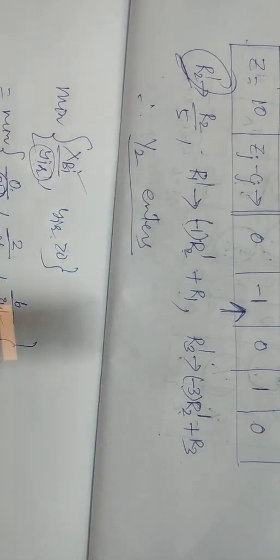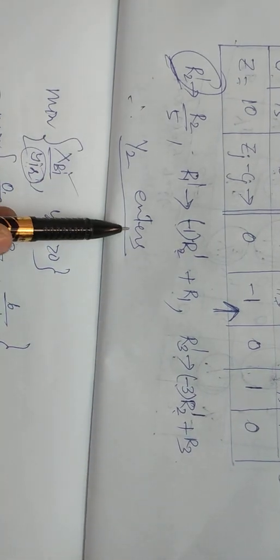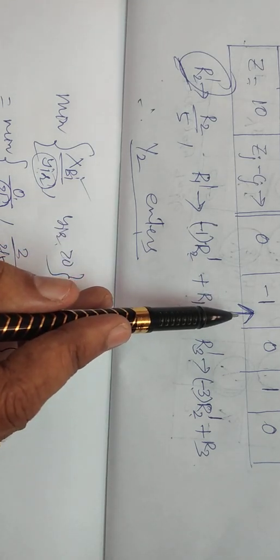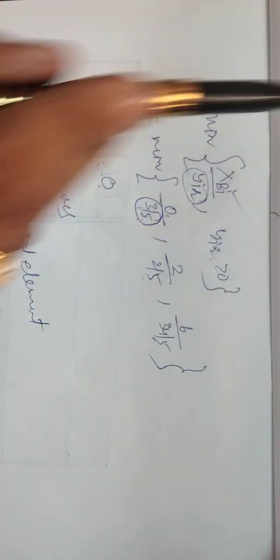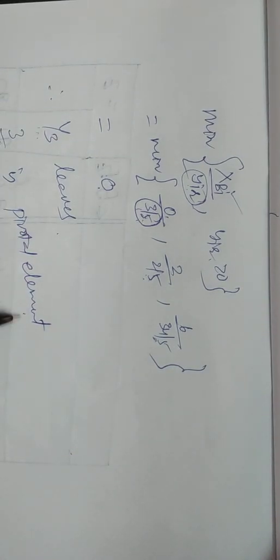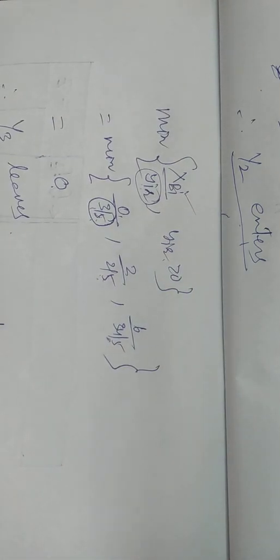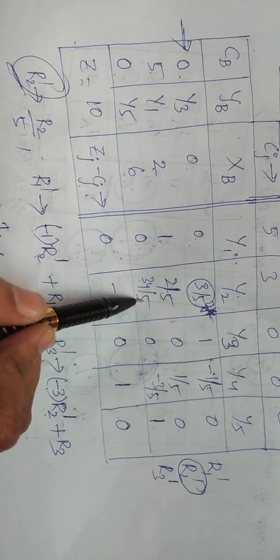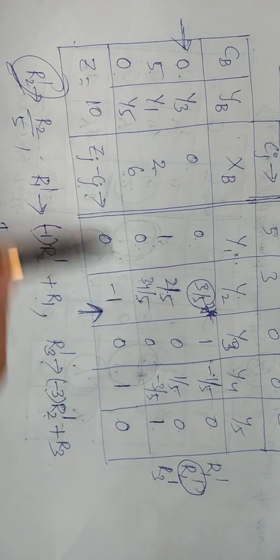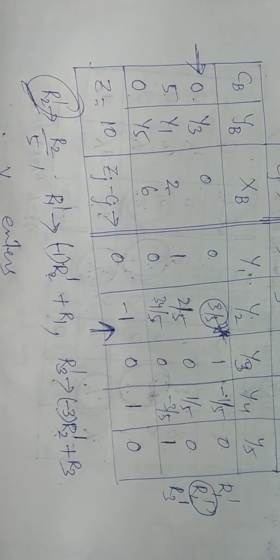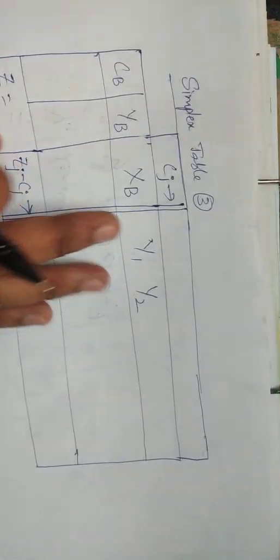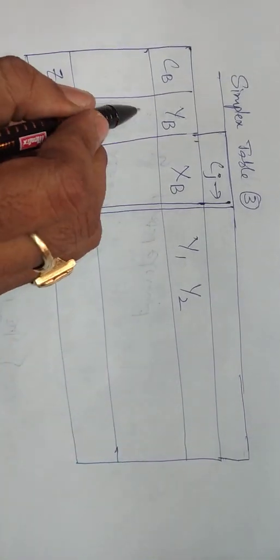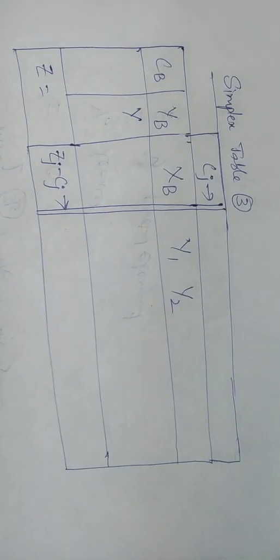Note: many students think XBi = 0 should not be considered, but no such rule exists — only YiR must be greater than 0, and here XBi = 0 with YiR = 3/5 (positive) is valid. Now do the row operations and proceed to Simplex Table 3, in which Y3 leaves and Y2 enters.